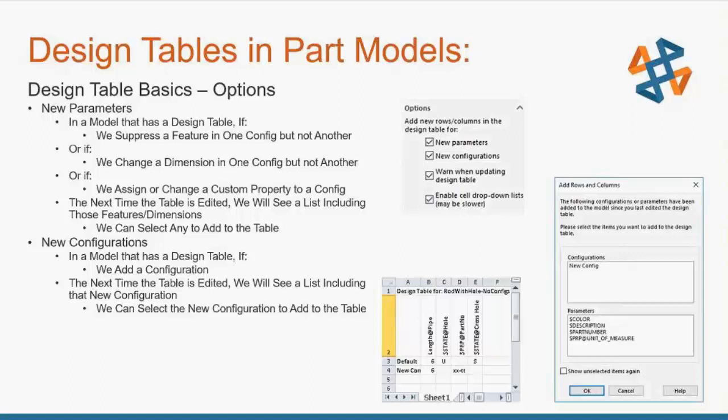The other options listed when inserting a design table include new parameters and new configurations. If a model has a design table and we suppress a feature in one configuration but not another, or change a dimension, or assign a change to a custom property, the next time we edit that table we'll see a list of those things and we can add them to our design table. If a model has a design table and we add a configuration — maybe by right-clicking in the configuration manager and copying and pasting a configuration — the next time we edit that design table, we'll see that new configuration listed and can add it.